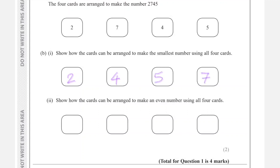The second part: show how the cards can be arranged to make an even number using all four cards. To make a number even, the last digit should be an even number. Here we have two even numbers: 4 and 2. So let's put 4 in the last position, and the other numbers in any order — for example, 2754. That's an even number.